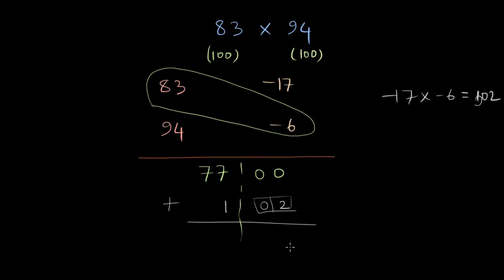And therefore the result is going to be seven, eight, zero, two, which is 7,802. And therefore the multiplication of 83 and 94 is 7,802.